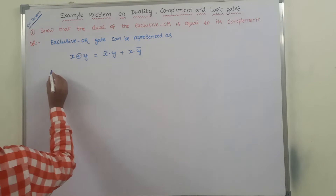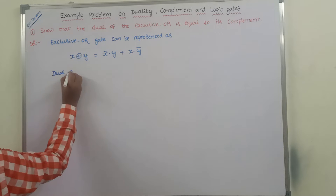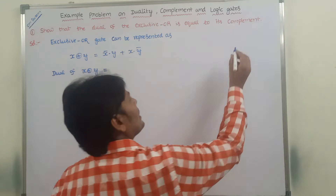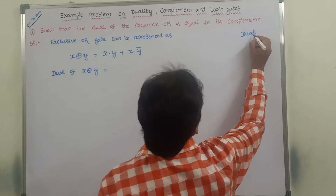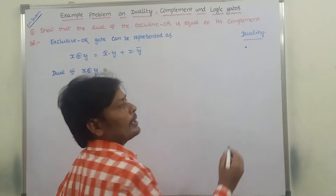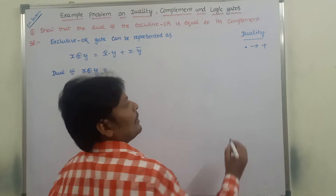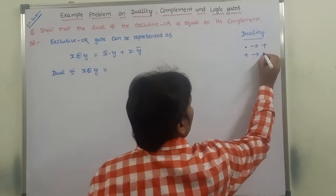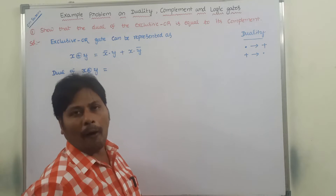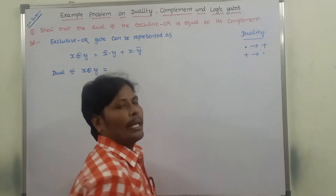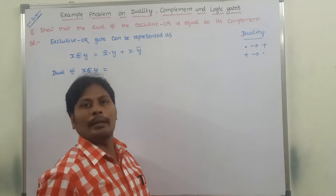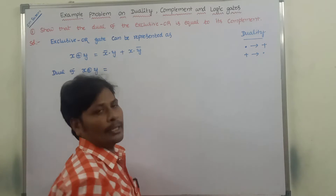First, we have to find out the dual of exclusive OR Y. What is the duality principle? In the duality principle, logical AND (dot) can be replaced by logical OR, and logical OR can be replaced by logical AND. So dot is nothing but logical AND, and plus is nothing but logical OR. Logical AND can be replaced by logical OR, meaning dot can be replaced by plus, and logical OR can be replaced by logical AND, meaning plus can be replaced by dot.